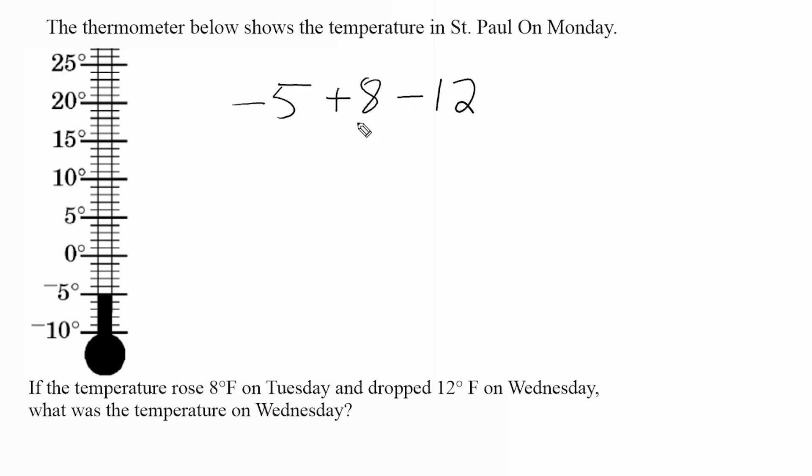Alright, so there is a couple of ways of doing this. We can use this thermometer as an actual number line if we wish. We can start at negative five and then go up eight from there.